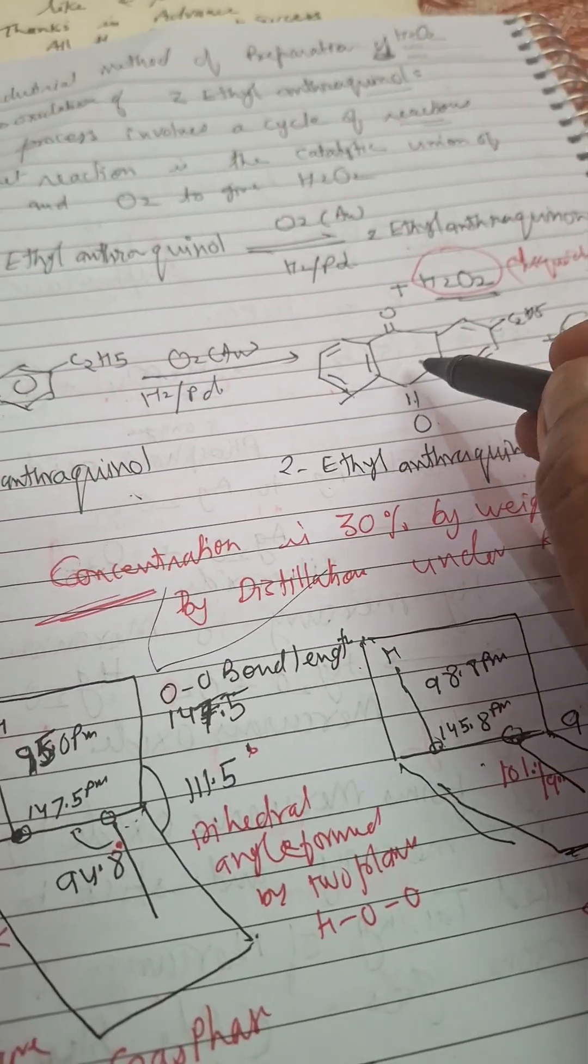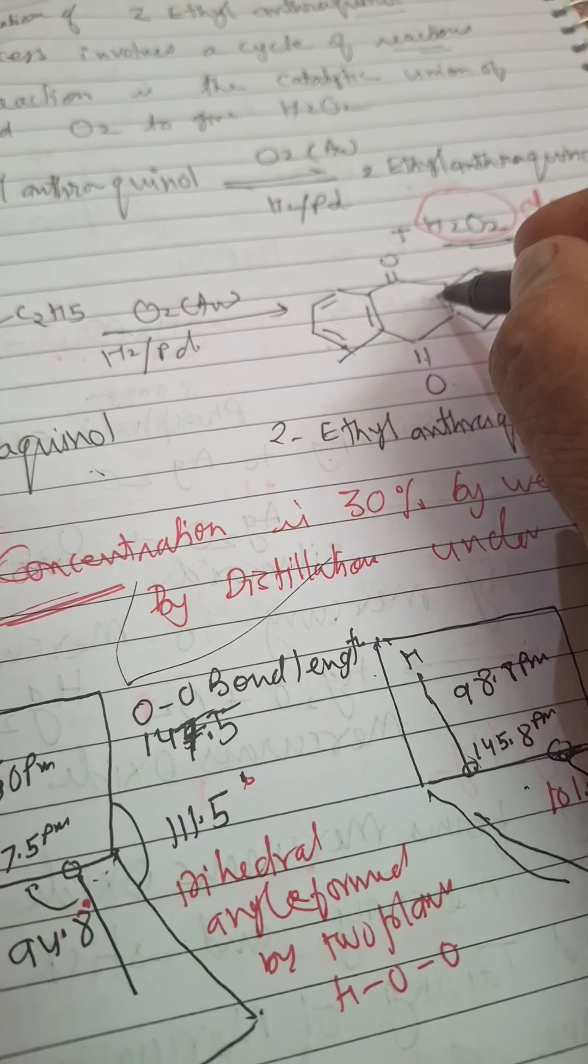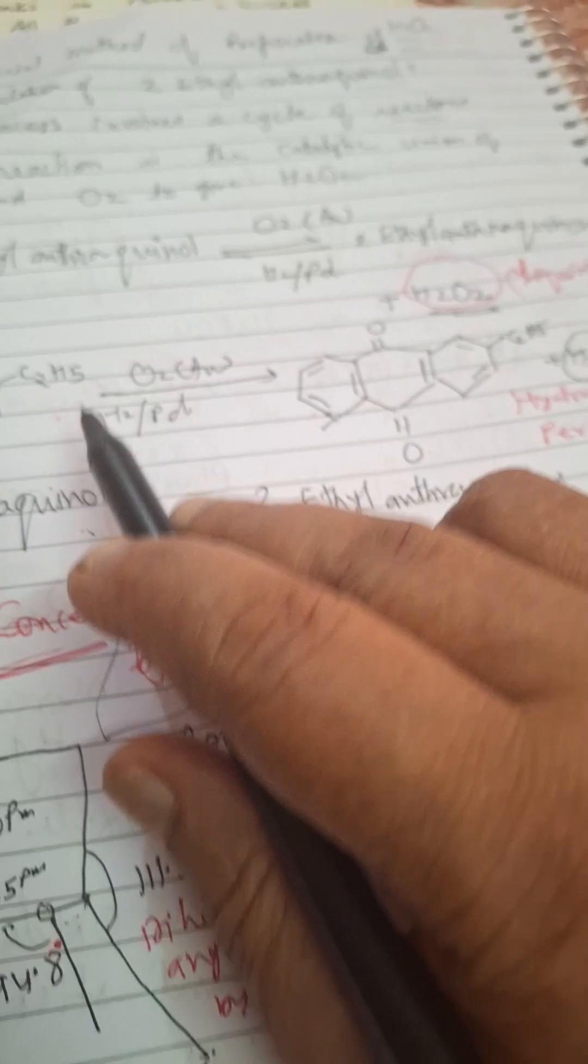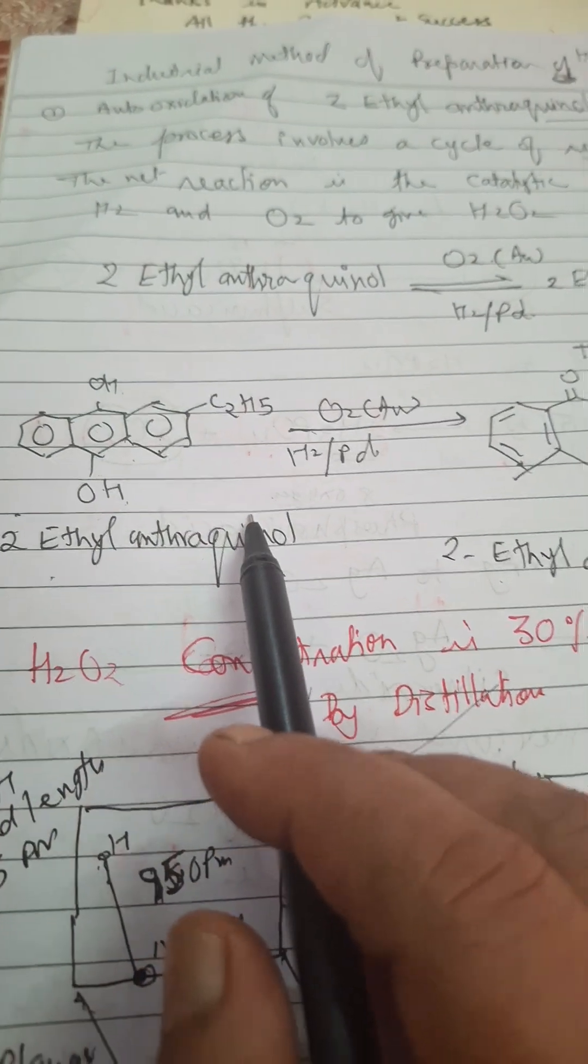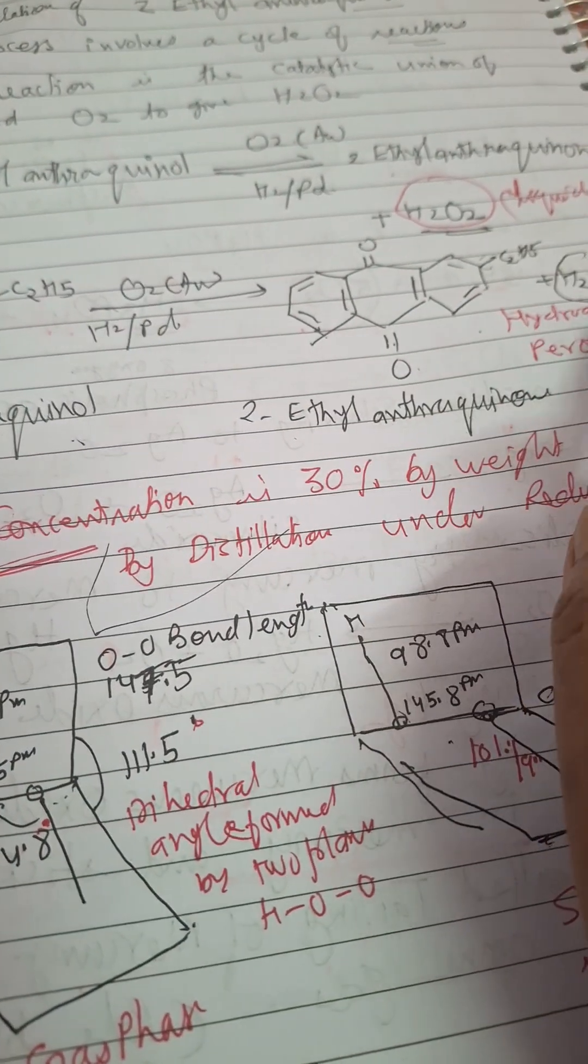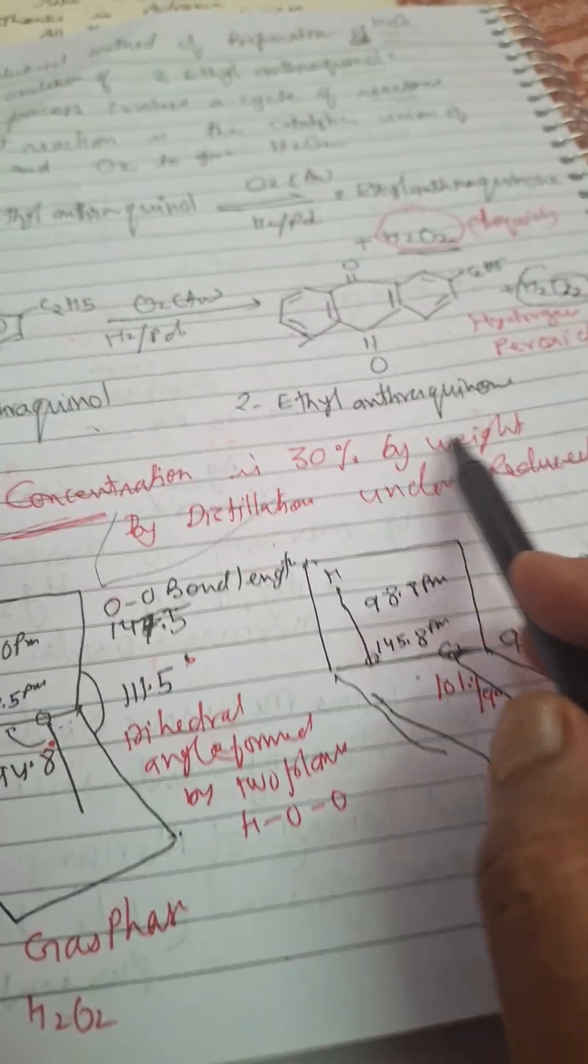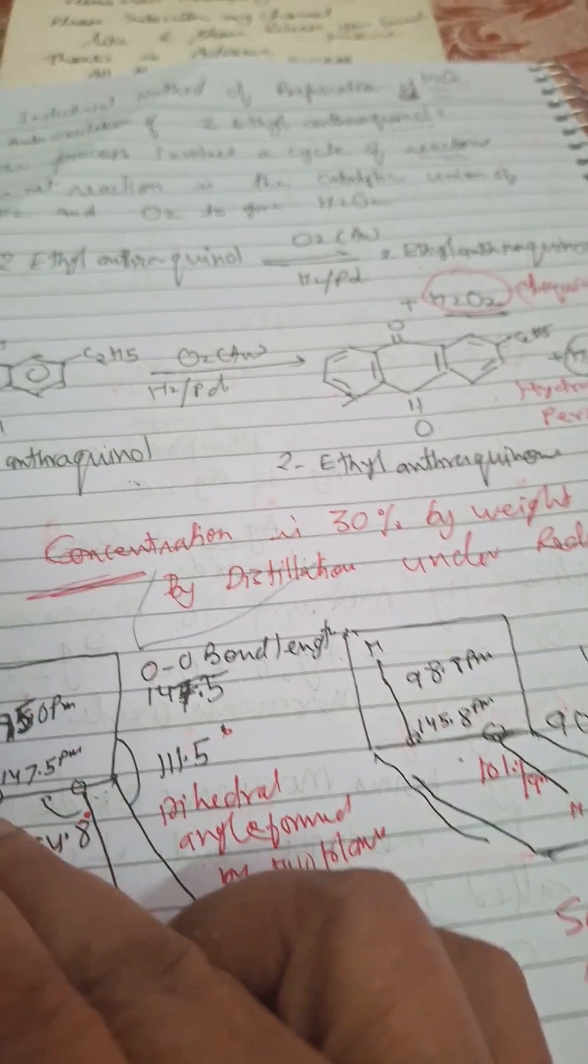In auto oxidation, this phenolic group undergoes oxidation and we'll get anthraquinone and H2O2 is obtained. So 2-ethyl anthraquinone on oxidation gives you H2O2 hydrogen peroxide. This is industrial method of preparation.